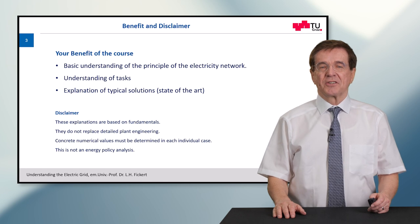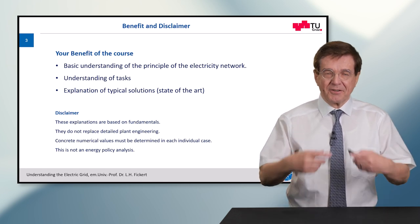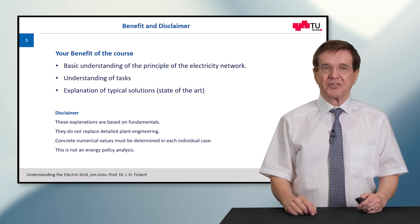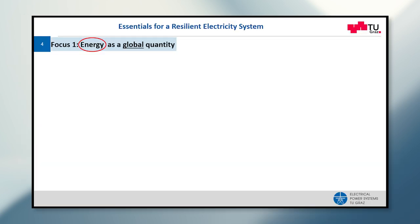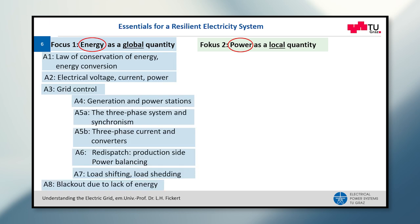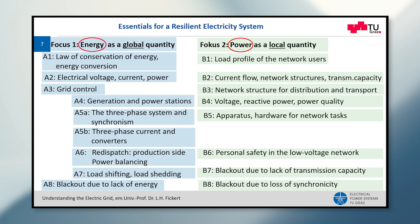This course is not meant as an engineering lecture, but it will give a general overview. So the essentials for a resilient electricity system are energy as a global quantity and focus number two is power as a local quantity. For the sake of completeness, I give you the full content of my lecture. Today we concentrate on blackout due to lack of energy.